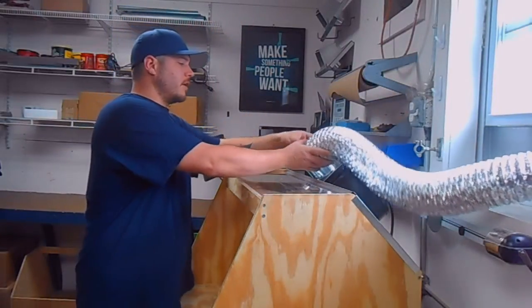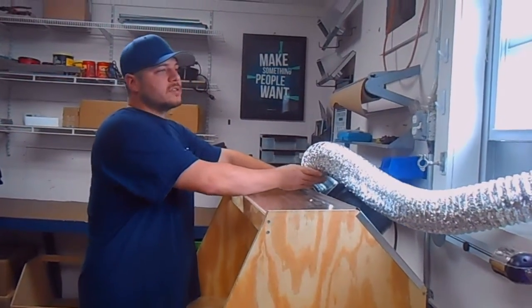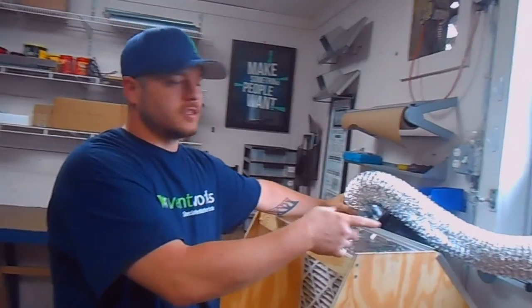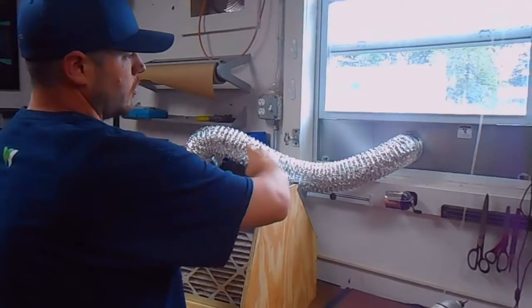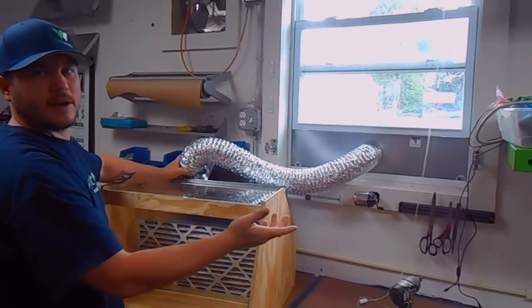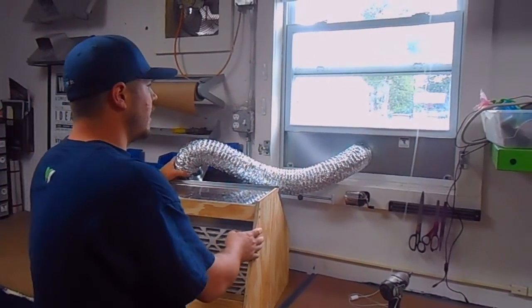You got to create a duct run. We're using our window dryer vent as a window vent to vent the spray booth. It gives us a short run, which is the shorter the better for duct, and we can also remove the window vent whenever we're not using the spray booth.